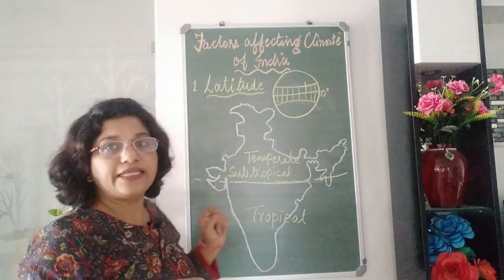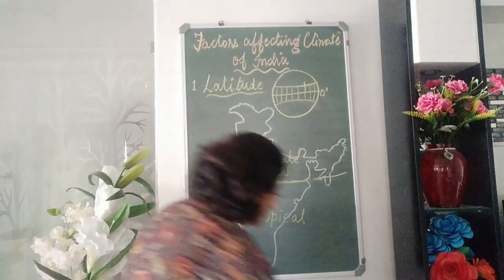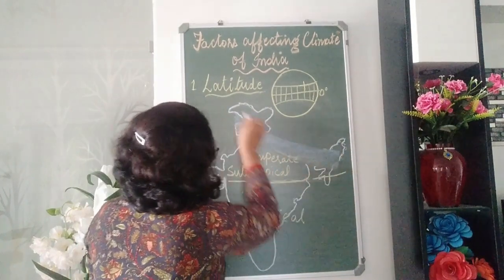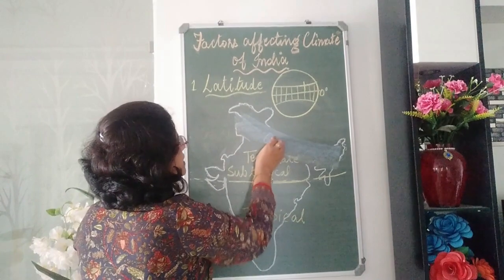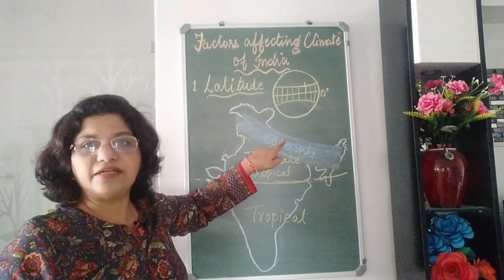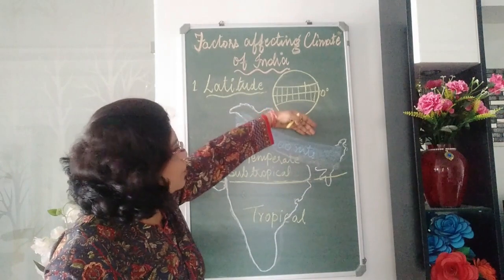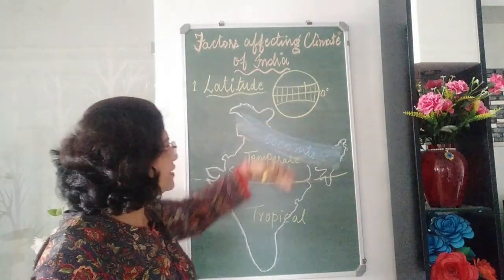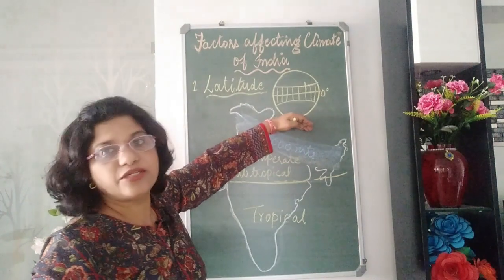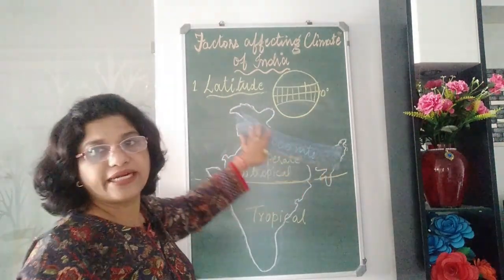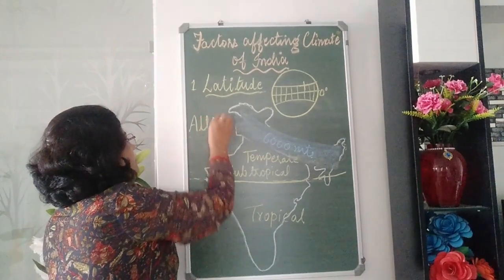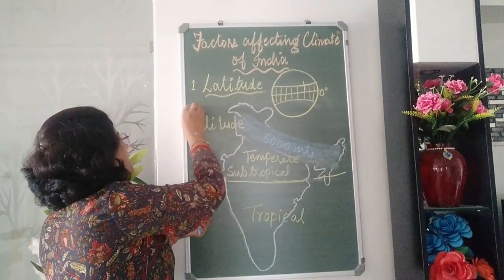The second point is altitude. The northern part of India is covered with very high mountains known as the Himalayas, with an average height of about 6,000 meters. This relief feature protects India from cold winds blowing from Central Asia and prevents monsoon winds from crossing the Himalayas. This is how the Himalayas act as a climatic divide, and that is how altitude affects the climate of India.